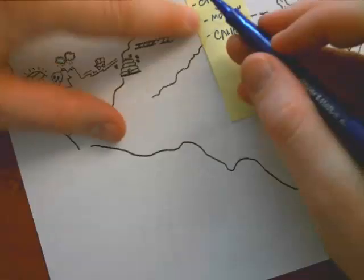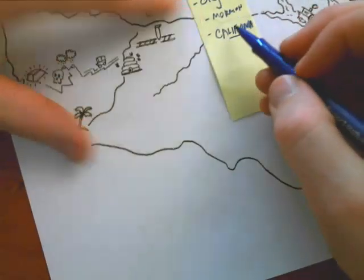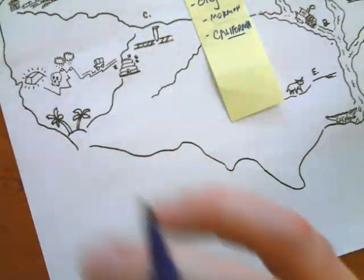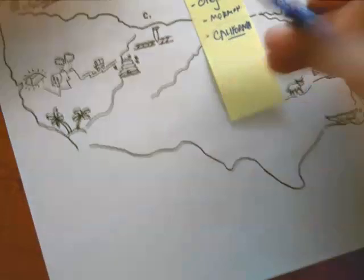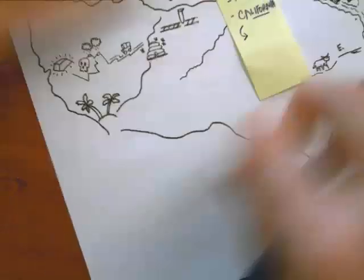But John C. Fremont's California, Oregon, and Mormon Trails kind of laid the groundwork for a huge influx of people moving west after we had the California Gold Rush.